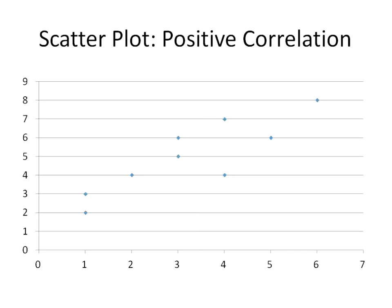A scatter plot is when you plot out certain points, usually on a plane with numbers on both axes. It could be something like homework grade versus test grade, or numbers against numbers. You see a correlation between them. With scatter plots, you're looking for a correlation, and there are three basic types.